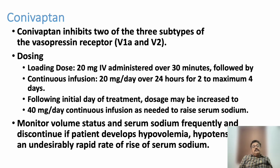Conivaptan is an injectable vasopressin receptor antagonist that inhibits two of the three subtypes of vasopressin receptors. Its loading dose is 20 mg IV administered over 30 minutes, followed by a continuous infusion of 20 mg per day over 24 hours for two to a maximum of four days.